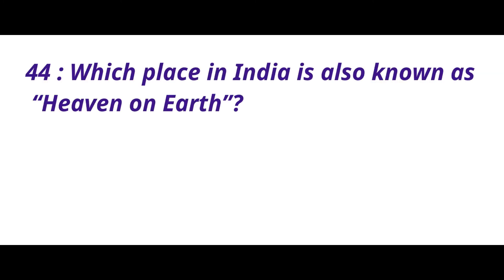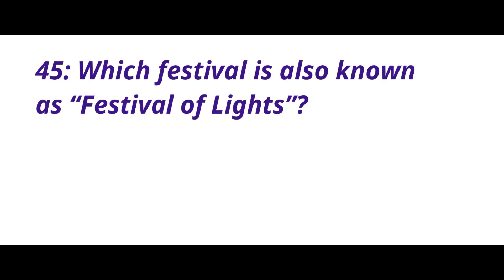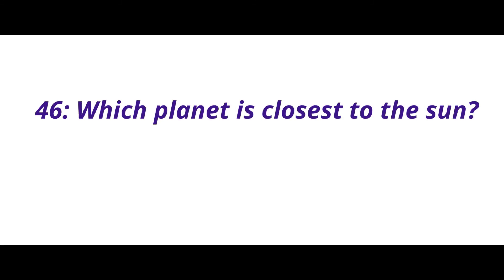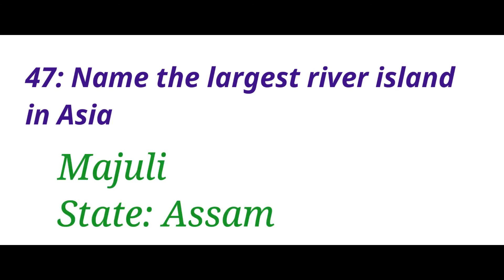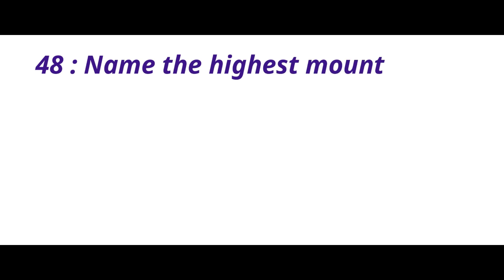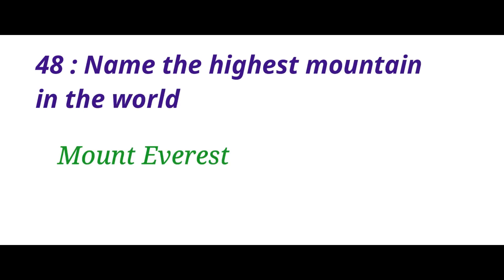Which place in India is also known as Heaven on Earth? The answer is Kashmir. Which festival is also known as the Festival of Lights? The answer is Diwali. Which planet is closest to the sun? The answer is Mercury. Name the largest river island in Asia. The answer is Majuli — it's located in Assam. Name the highest mountain in the world. The answer is Mount Everest.